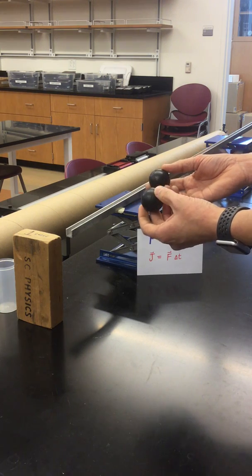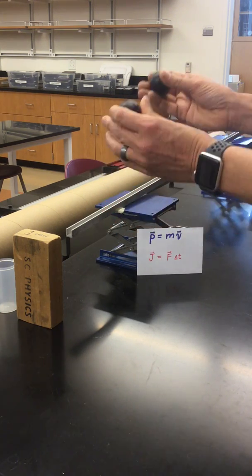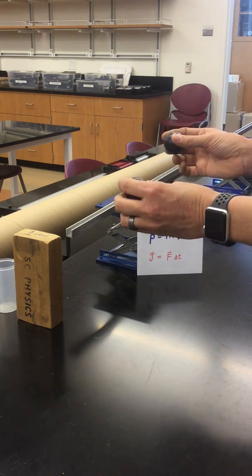So I have two rubber balls that look like they're the same size, feel like they're the same amount of mass, but behave differently when they collide with a surface.